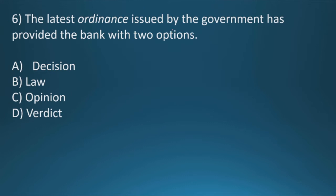Question six: The latest ordinance issued by the government has provided the bank with two options. Here ordinance means an authoritative order, which is equal to law or rule. Decision is not a law or rule, so this option will not be the correct one. Law, yes, law is the correct answer. Opinion is not a rule or a law, and this also is not the correct answer. So our option B, law, is the correct answer.